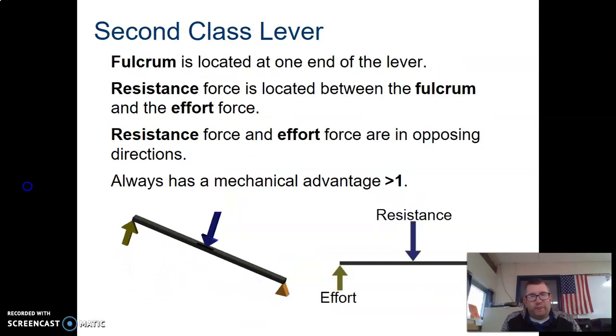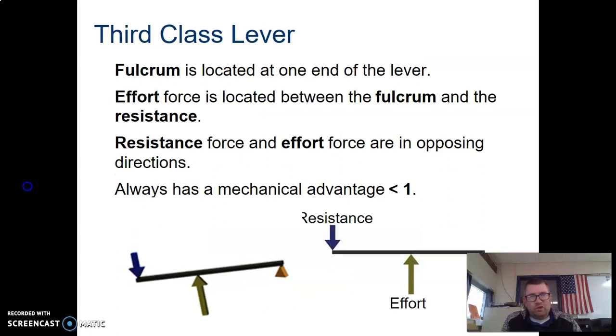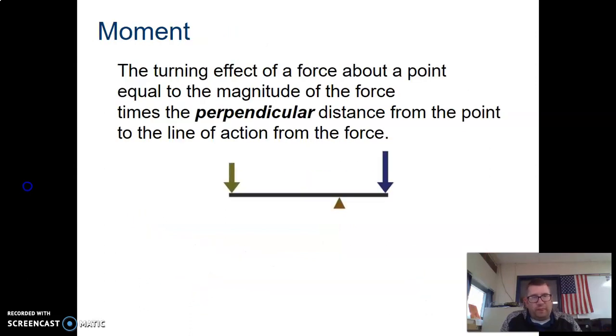Second class lever, the fulcrum is located at one end of the lever. Think about a wheelbarrow. The resistance is in between the effort and the fulcrum. When I pick up on a wheelbarrow, the load is in between my effort and where the fulcrum is or where the lever is turning. Third class lever is the reverse of that. Once again the fulcrum is located at one end, but this time the resistance force is outside of the effort force, so the effort is in between the resistance and the fulcrum.